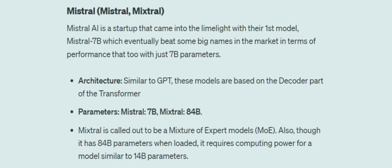Talking about the architecture, these Mistral models are again based on the decoder part of the transformer, similar to GPT. The first version released had 7 billion parameters, and the newer model released very recently has 84 billion parameters — that is Mixtral.